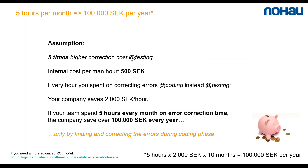So how much can you save? Well, this is a rule of thumb that I usually use. If your team spends about five hours every month correcting errors that come back from testing, and you correct them immediately during programming, you can save about 100,000 Swedish kronor per year — just by moving the detection and error correction phase earlier.